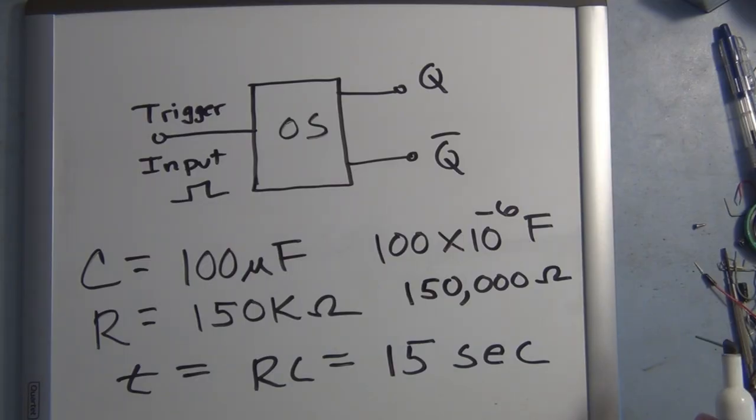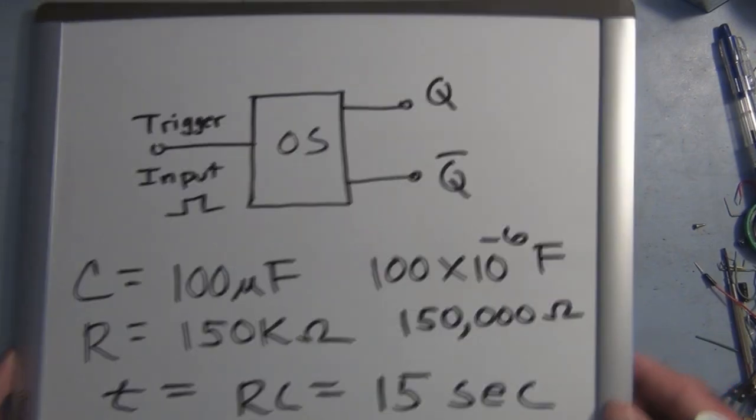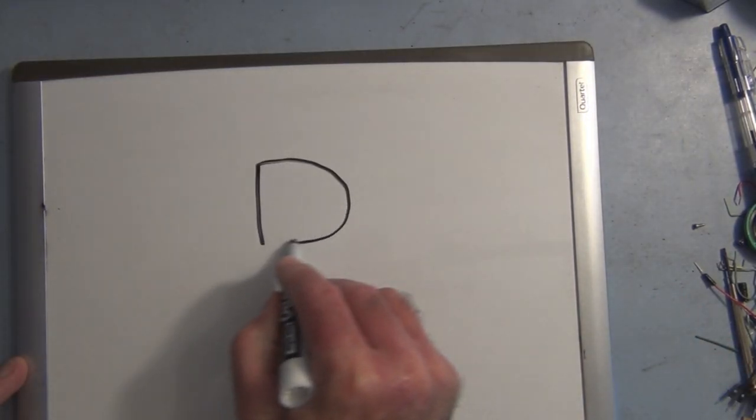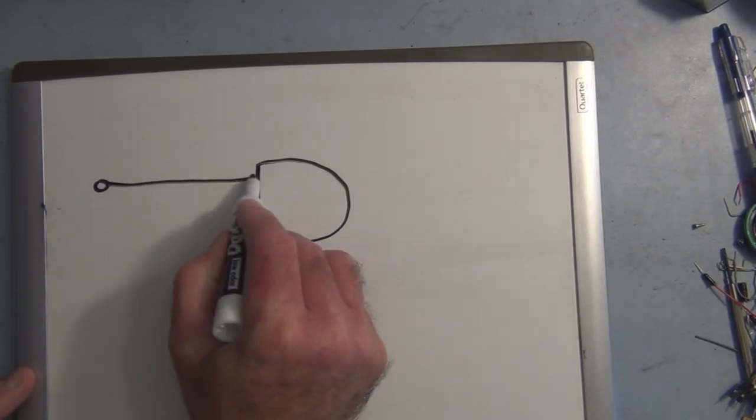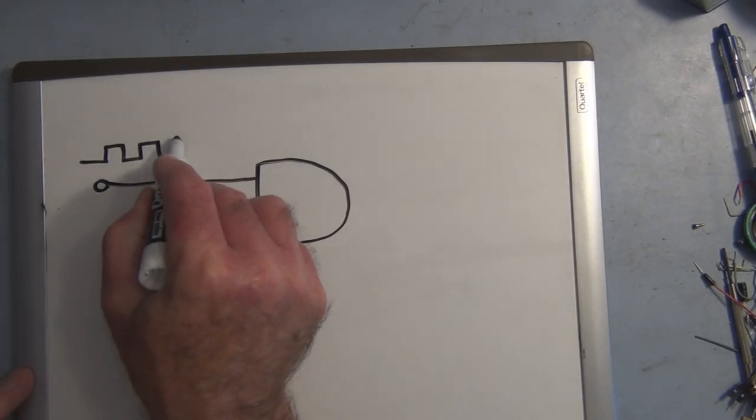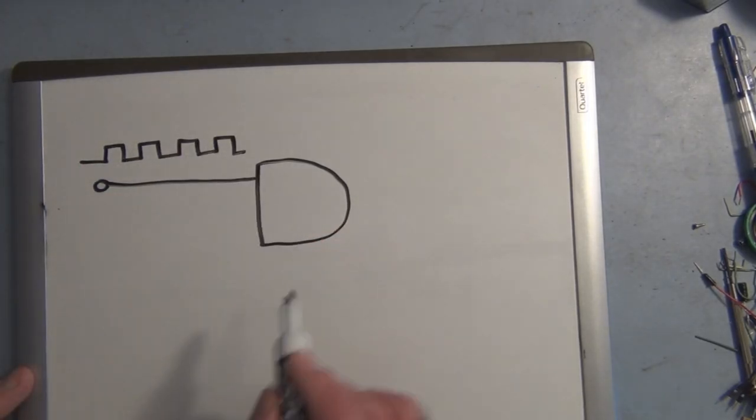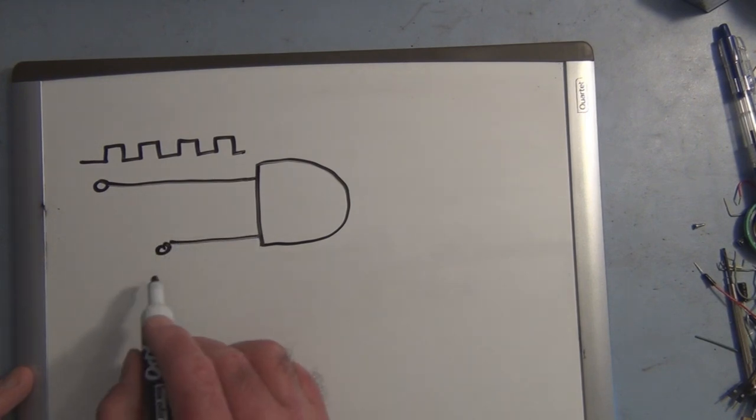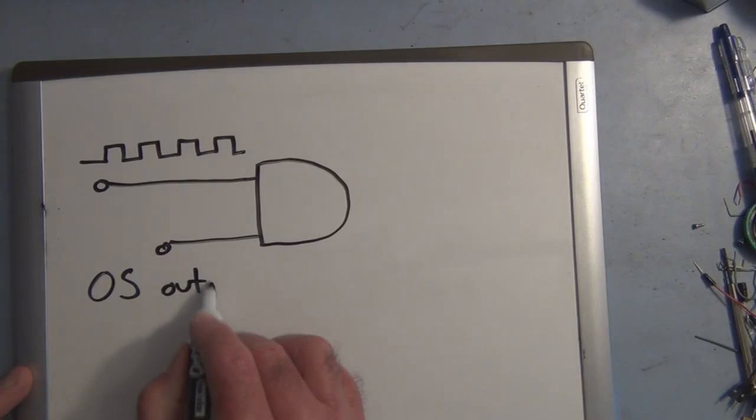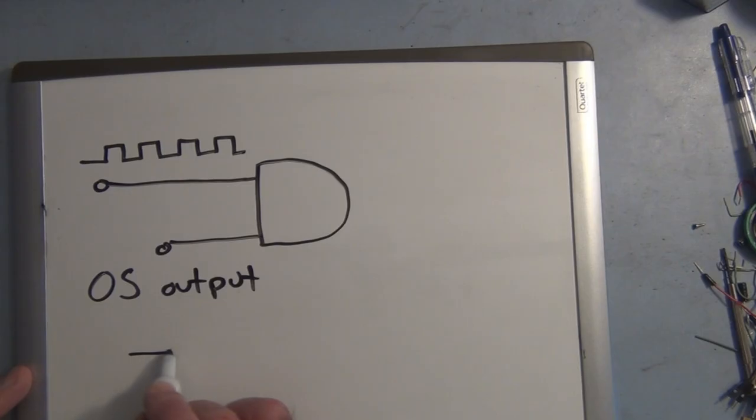And I have a resistor that's 150k ohms. So this is 100 times 10 to the minus 6 farads times 150,000 ohms. So if I multiply these two together I get 15 seconds, so the pulse width is going to be 15 seconds. In addition, what I've done is I have an AND gate.